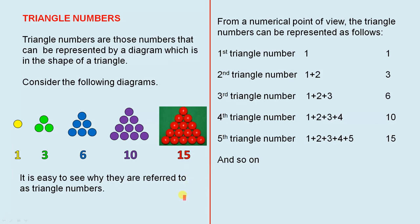It is easy to see why they are referred to as triangle numbers. From a numerical point of view, the triangle numbers can be represented as follows. So the first triangle number is one.